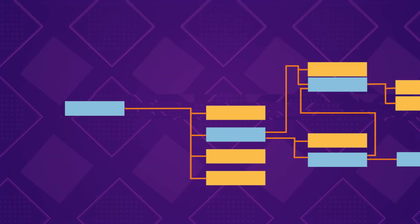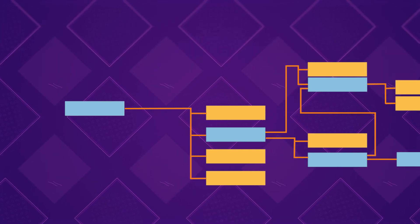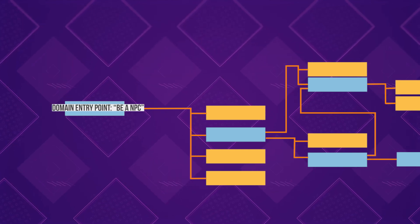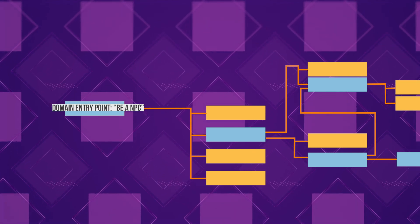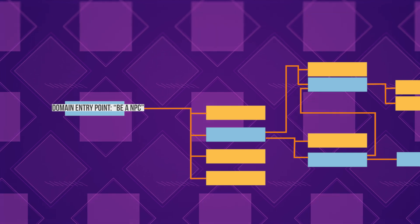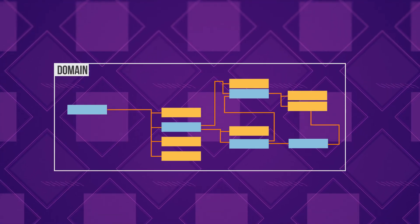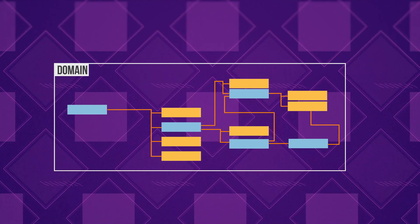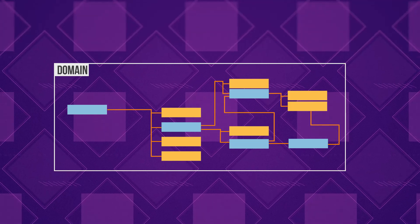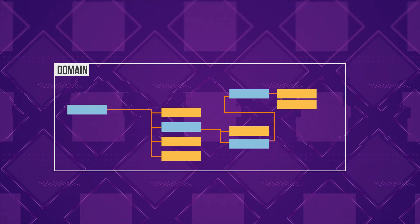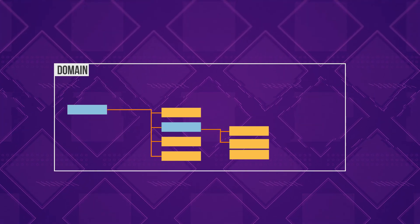When creating your AI you need to define a compound task to be your domain's root. The connected tasks is what we call a domain, which represents what it means to be the NPC. During planning, all compound tasks are decomposed into their primitives, and this list of primitives is what we call a plan.